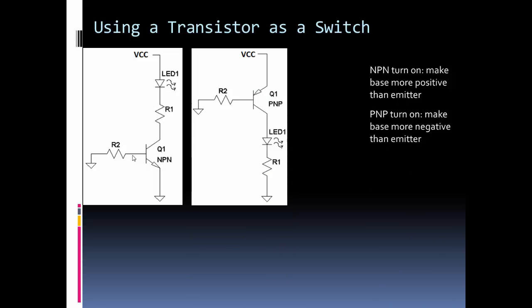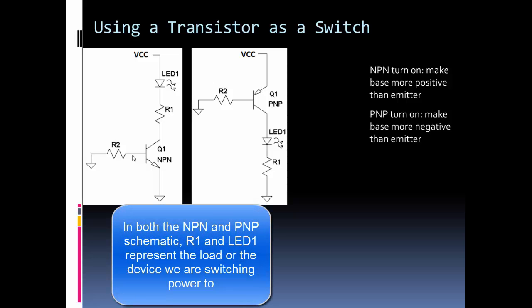PNP it's the opposite. So for the PNP transistor, we want to make the base more negative than the emitter. And typically we have the load in different spots. So with the PNP we'll typically have the load between the emitter and ground. And with an NPN we're typically going to have the load between the power source VCC and the transistor.